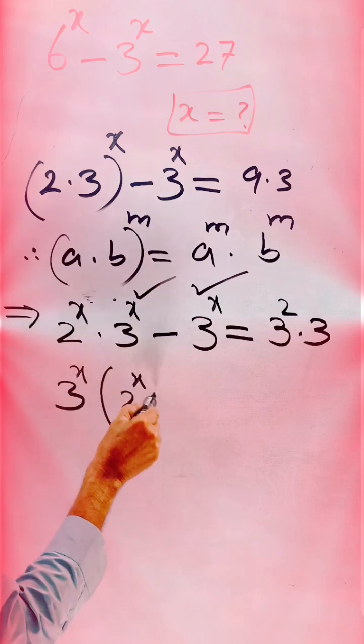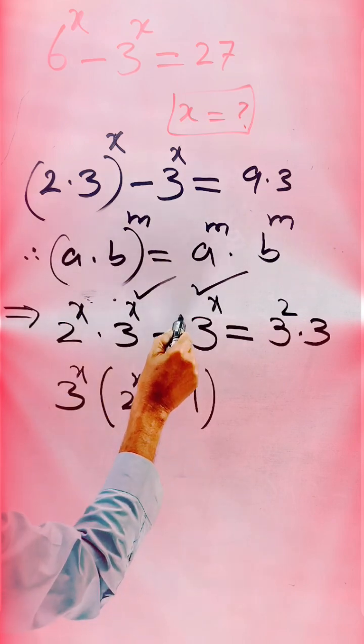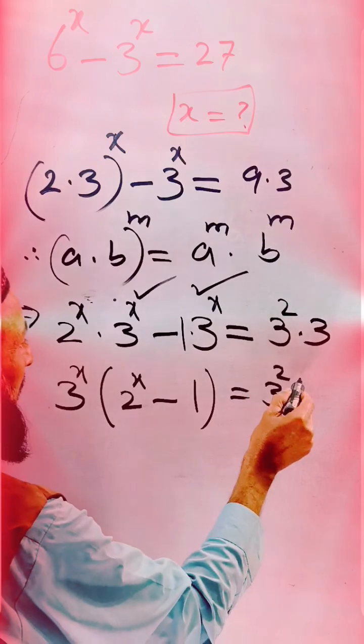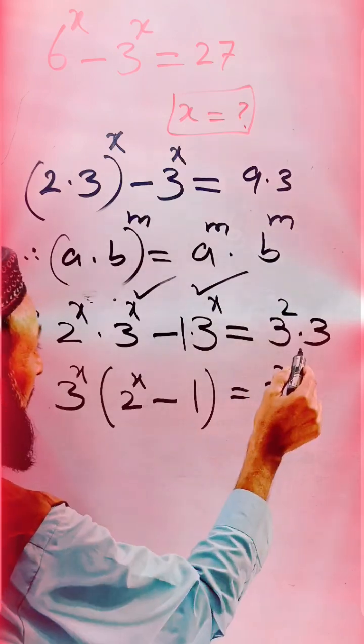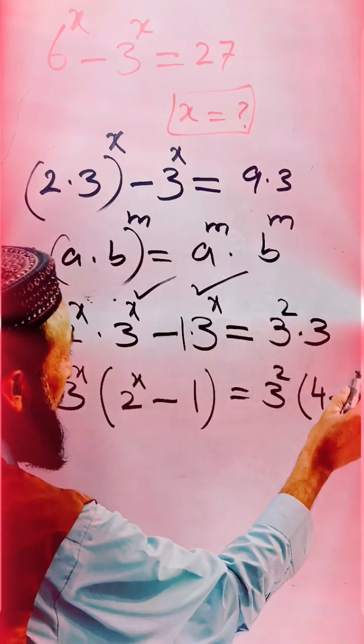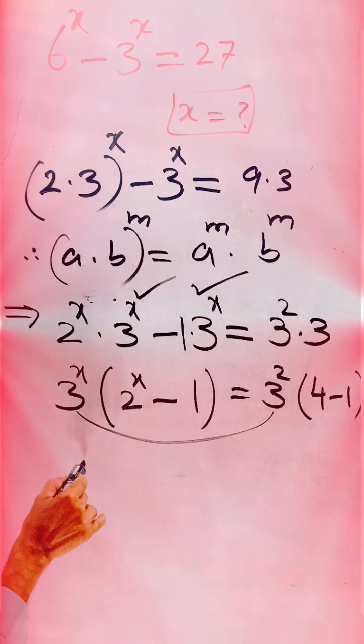And 3^x we take common, 3^x is common: 2^x - 1, because the coefficient of this one is 1, is equal to 3 square. And here this term we are making 4 minus 1.